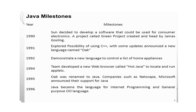Hot Java was used to locate and run applets — small Java programs that run on the web browser. In 1995, Oak was renamed as Java. Many companies such as Netscape and Microsoft announced their support for Java. In 1996, Java became the language for internet programming and general purpose object-oriented programming.